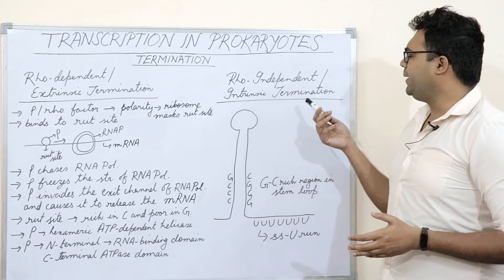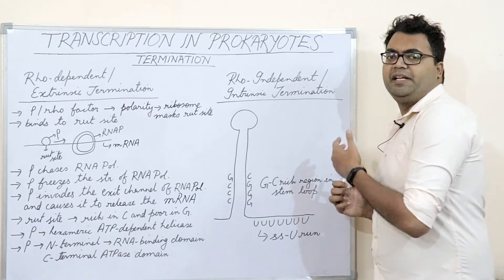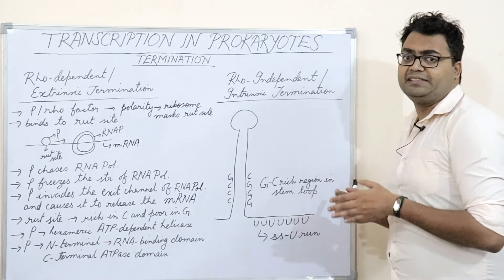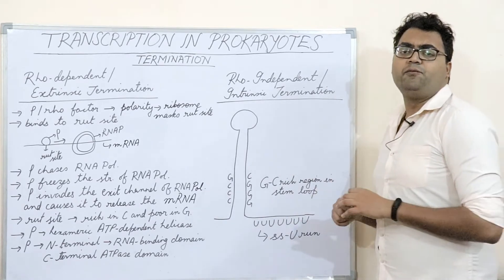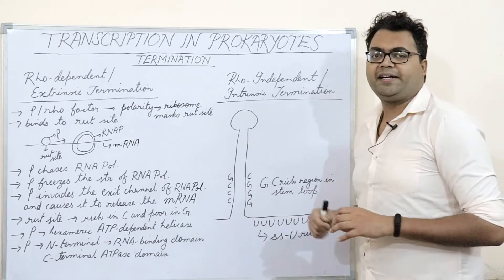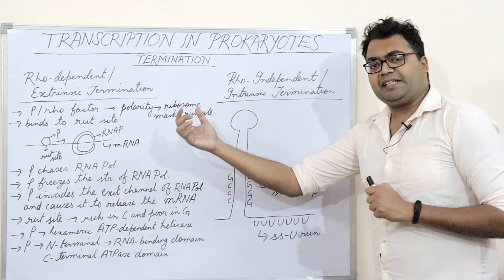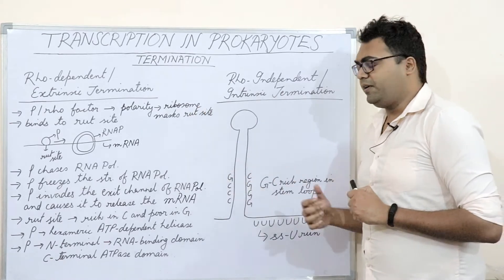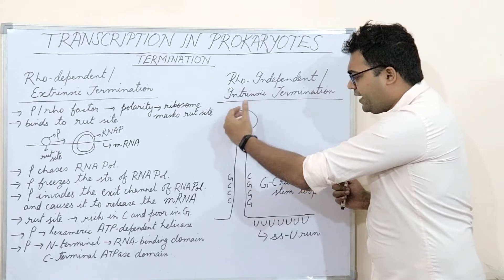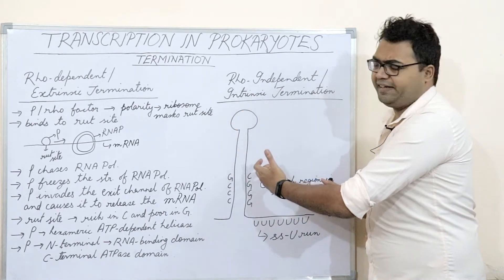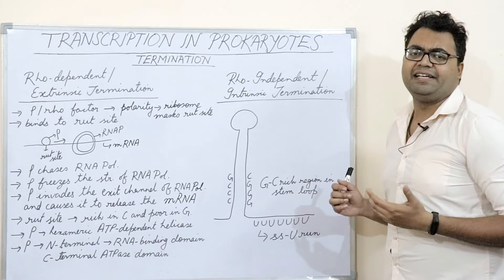Number one is rho-independent, number two is rho-dependent. Rho-independent mode of termination of transcription in mRNA is also known as intrinsic termination because it does not include the involvement of the rho factor, which is an ATP-dependent helicase that binds to specific sites in the RNA only. So it does not involve any ancillary or auxiliary factors — it is known as rho-independent. It happens intrinsically, on its own.